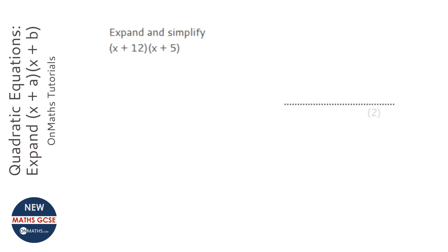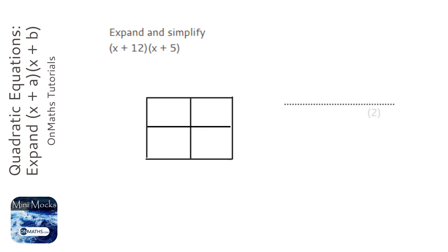Now there are quite a few different ways of answering this question. Basically, you just need to multiply everything in the first bracket by everything in the second bracket. I'm just going to use the grid method, but if you've got a different method, stick with it, as long as you're getting the right answer.